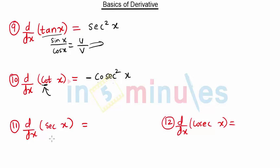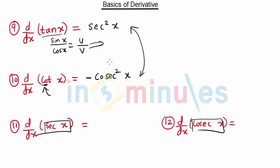The derivatives of sec x and cosec x are similar — both involve a product. The derivative of sec x is sec x times tan x.